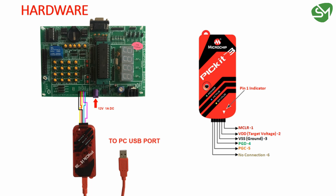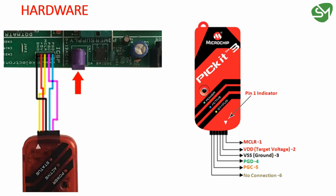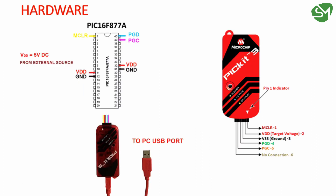Connect the PICkit 3 to your PC through a mini USB cable for programming the microcontroller. If your development board is not showing these pinouts, or if you do not have a development board, you can directly connect the terminals of PICkit 3 to the pinouts of the microcontroller and build this circuit on a breadboard for programming.